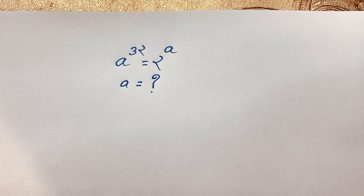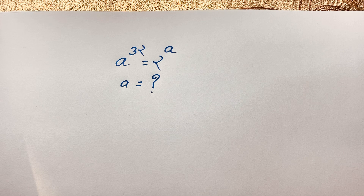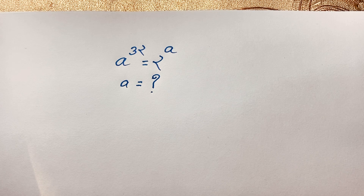Hello everyone. In this video, we have solved a nice exponential math problem. The question is a to the power 32 is equal to 2 to the power a. We find out what is the value of a in this exponential expression. So let's start.